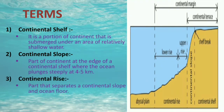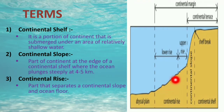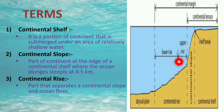Continental rise is the part that separates the continental slope from the ocean floor. Continental margin is the combination of the continental shelf, continental slope, and continental rise together. As shown in the diagram, the continental margin encompasses all three of these features.